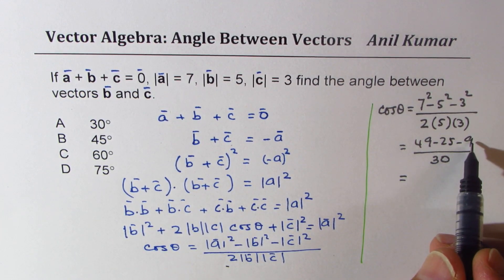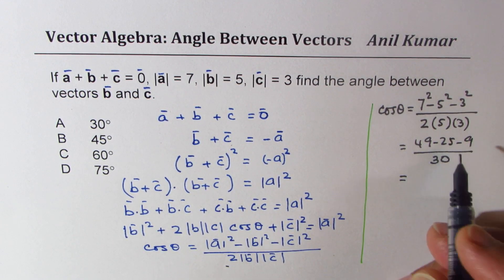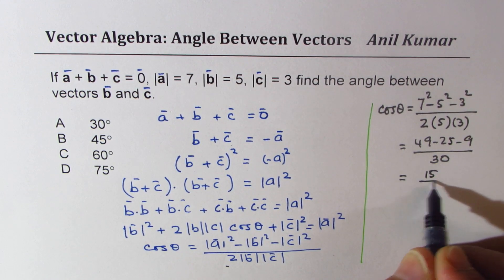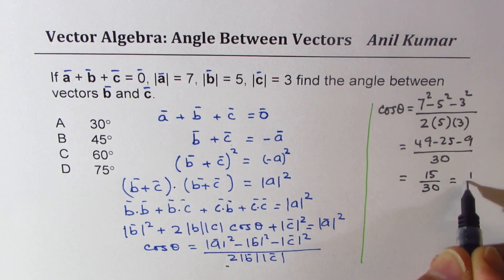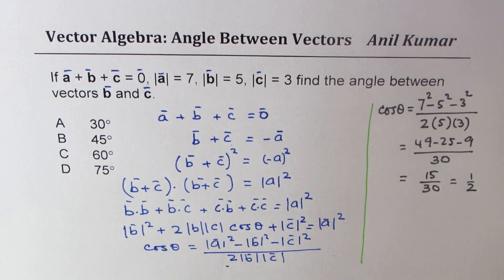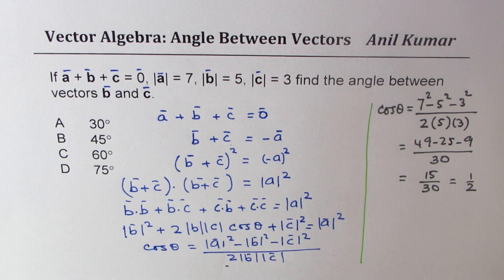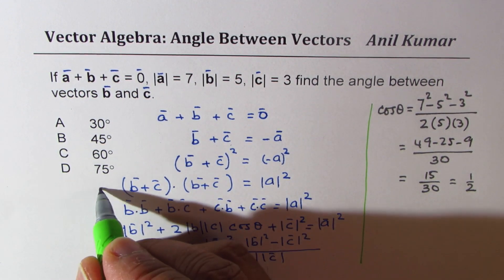This is 49 minus 9 is 40, when you take away 25 we get 15. So we get 15 over 30, which is half.